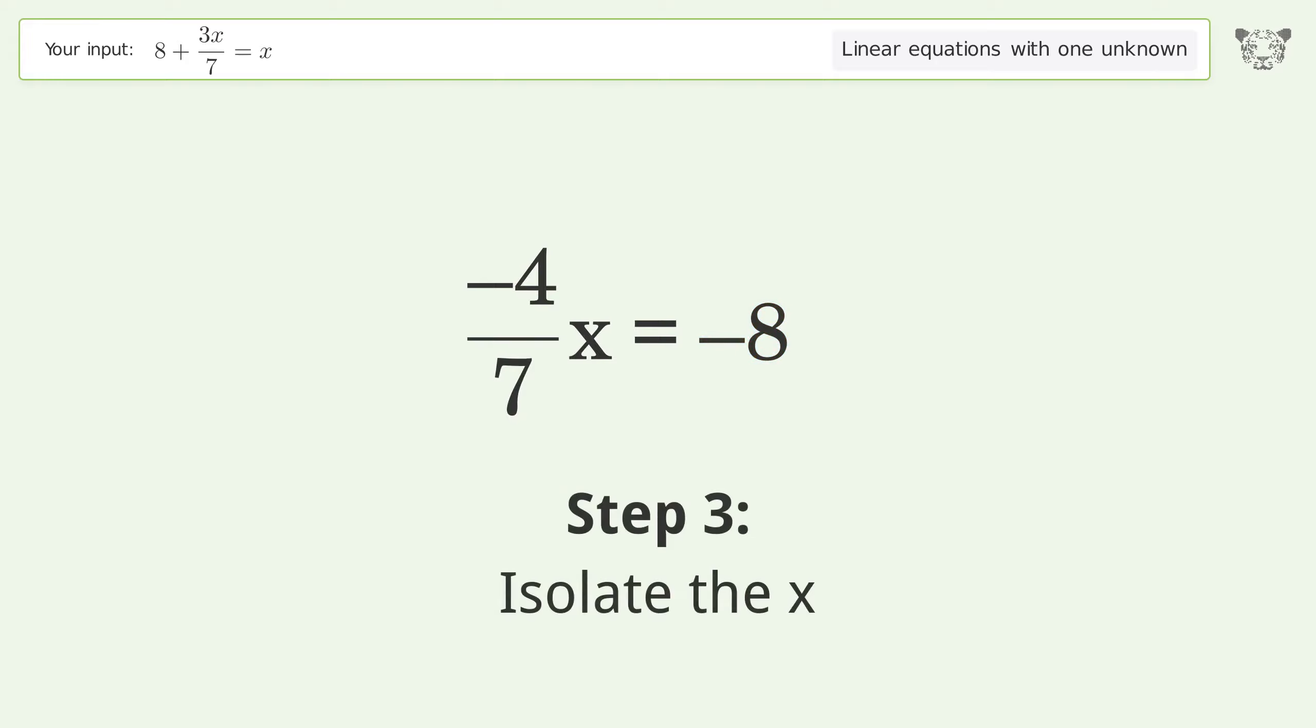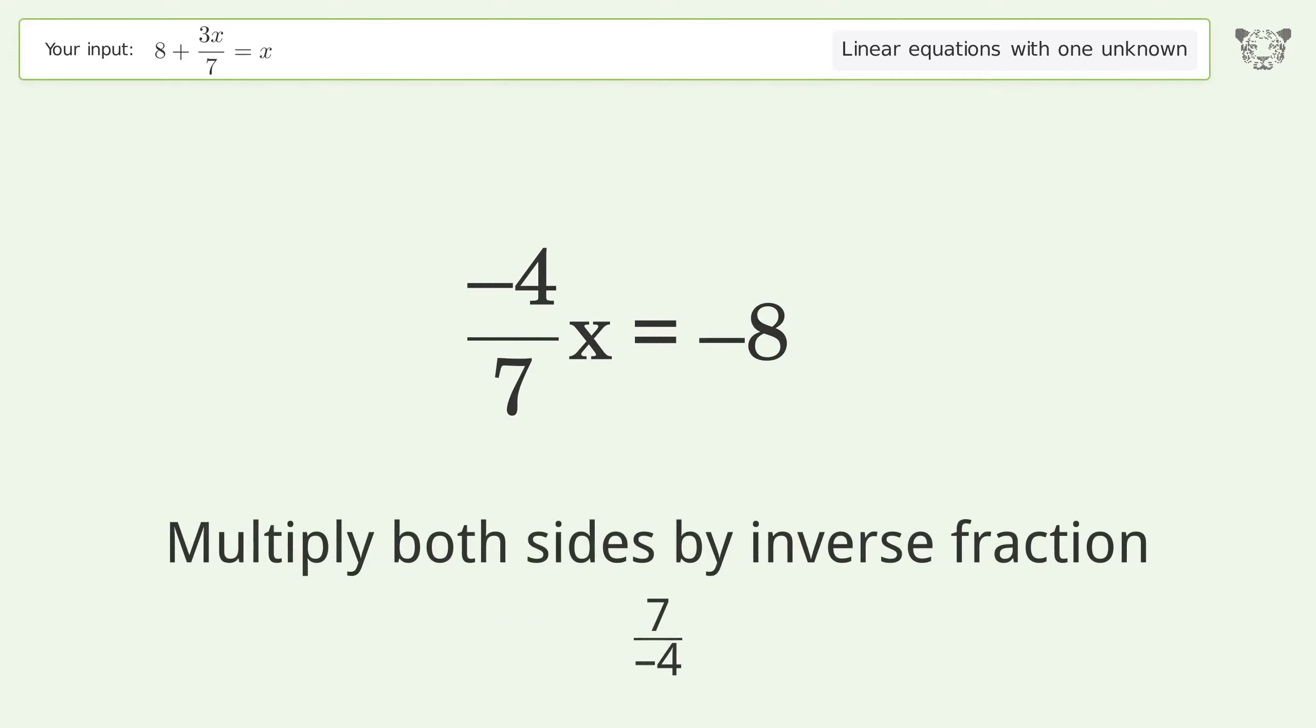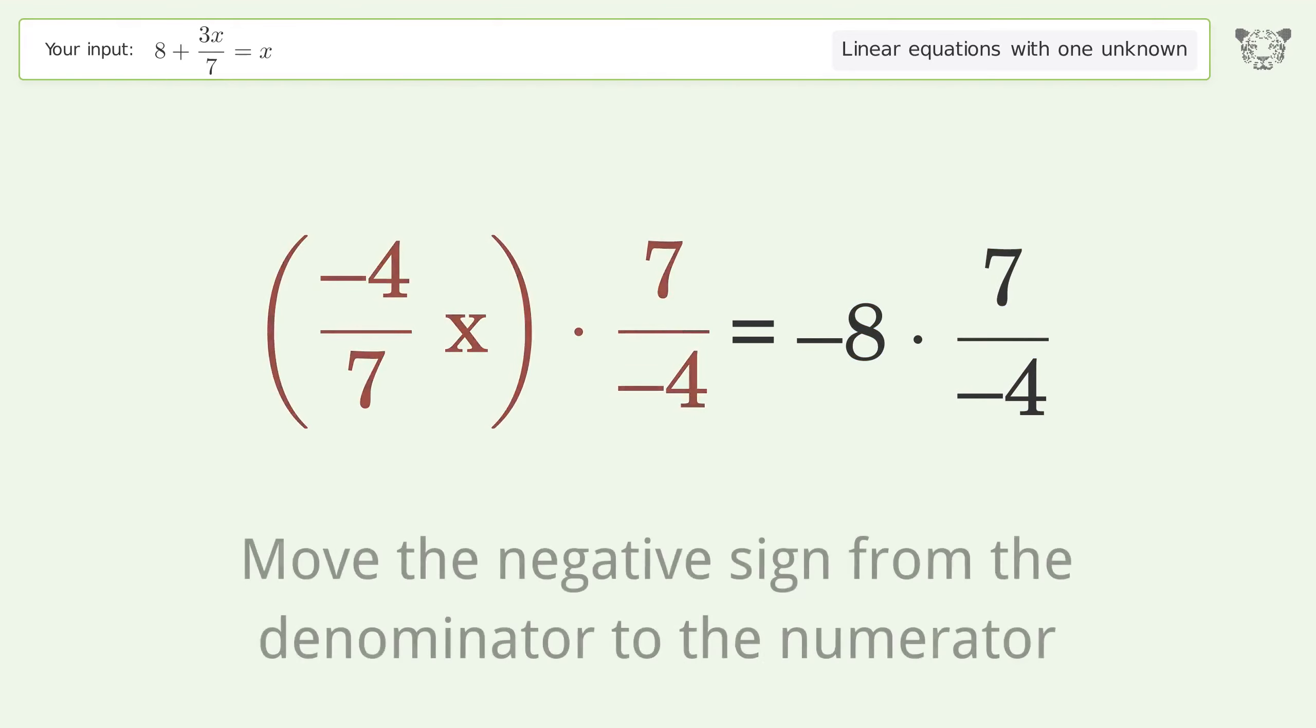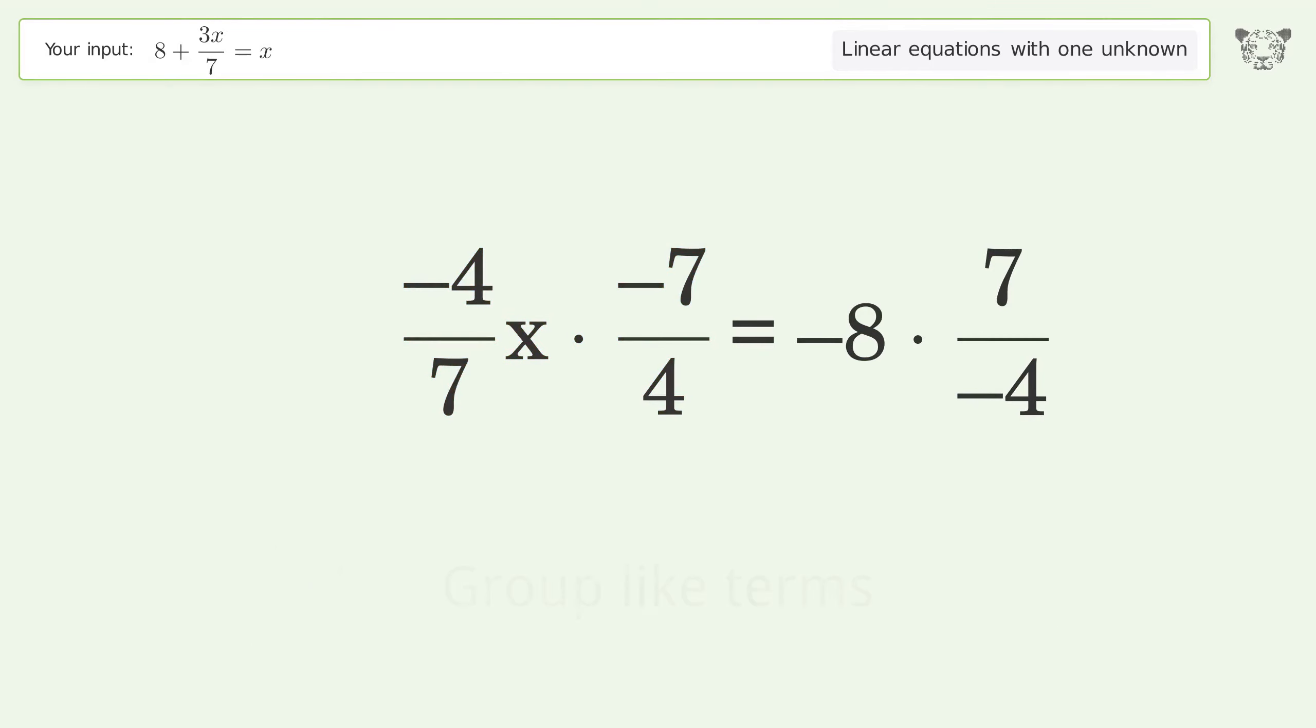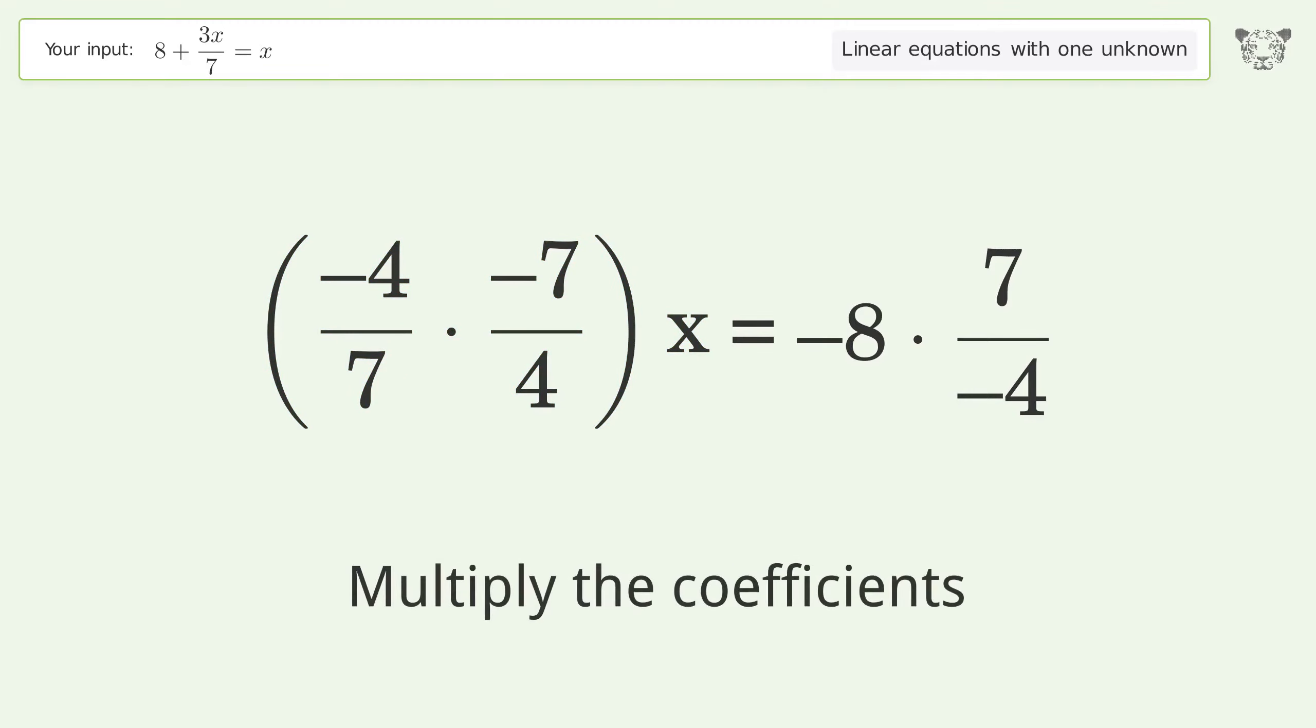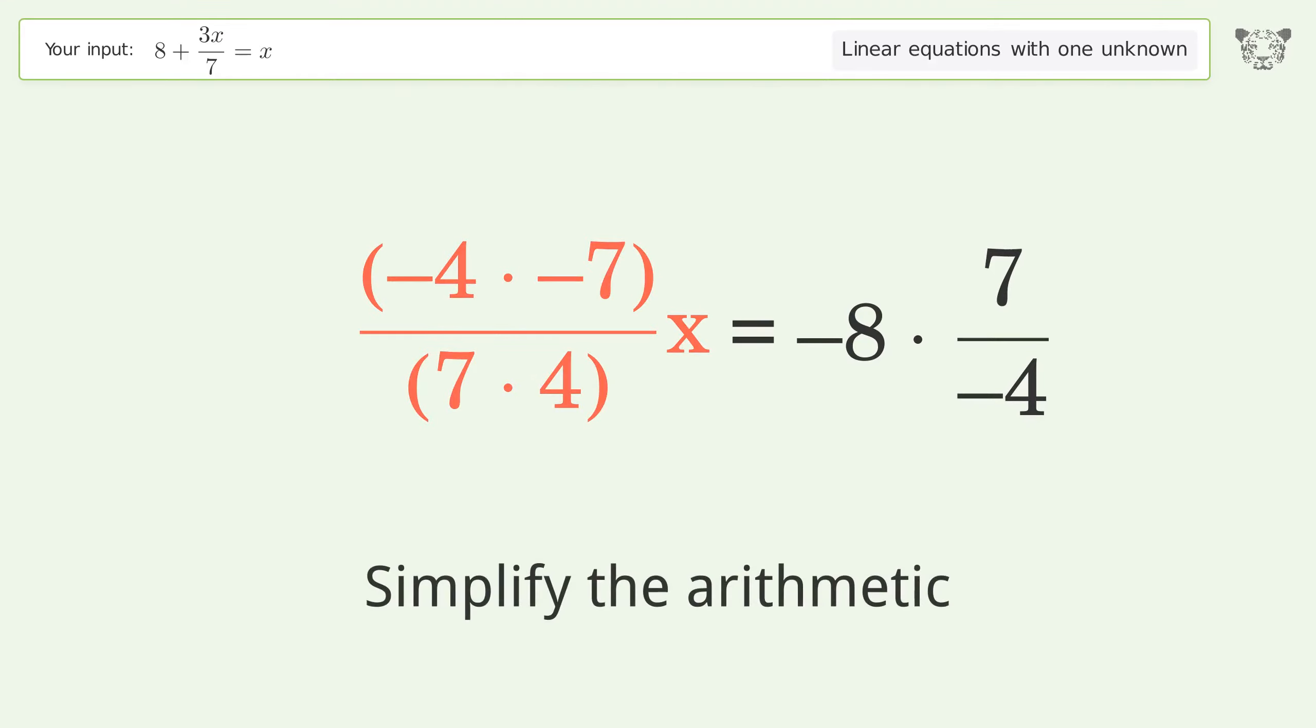Isolate the x. Multiply both sides by inverse fraction 7 over negative 4. Move the negative sign from the denominator to the numerator. Group like terms. Multiply the coefficients. Simplify the arithmetic.